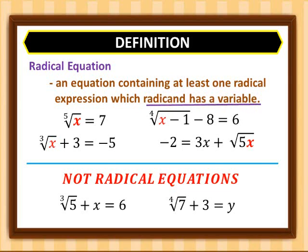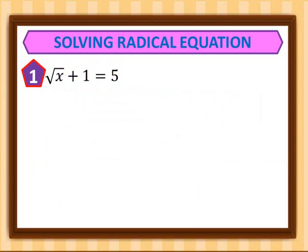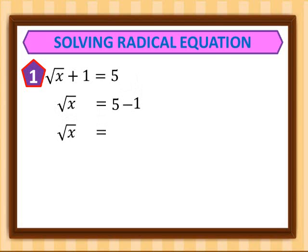Now let's solve a radical equation. For the first example, we have the square root of x plus 1 is equal to 5. We transpose the 1 to the other side, giving us the square root of x is equal to 5 minus 1.